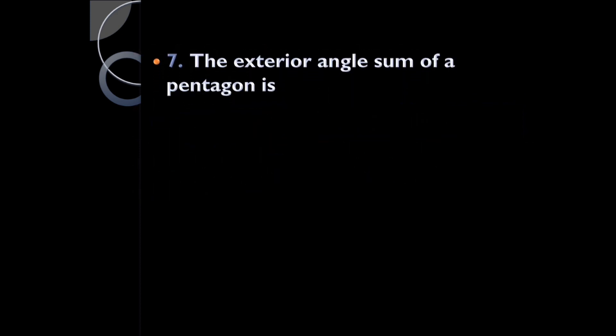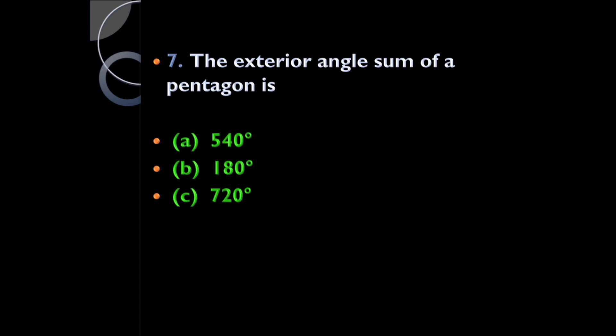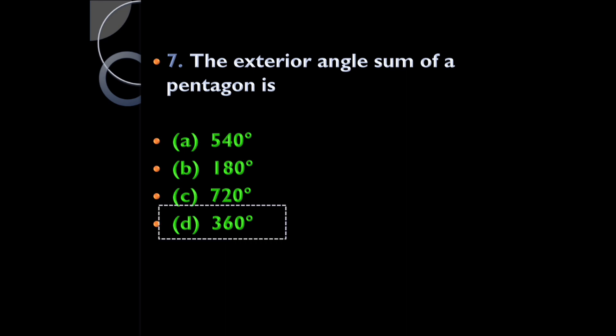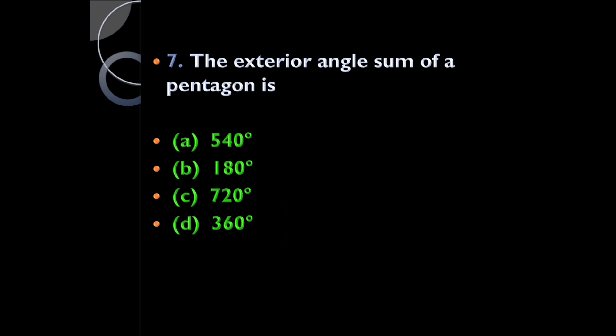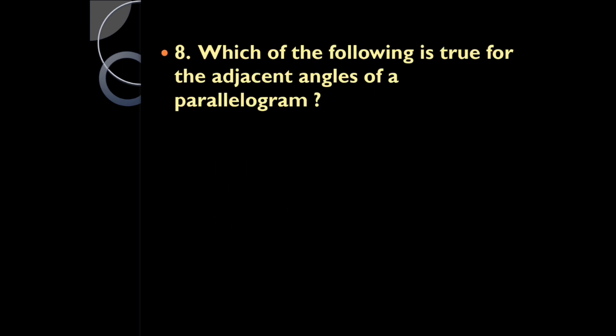The exterior angle sum of a pentagon is: 540°, 180°, 720°, or 360°? It is 360°, because the exterior angle sum of any polygon is 360°. So for a pentagon also, the exterior angle sum is 360°. Which of the following is true for adjacent angles of a parallelogram?